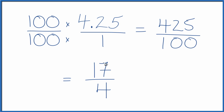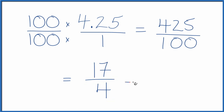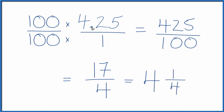This is an improper fraction because the numerator is larger than the denominator, so we could write it as a mixed number. 4 goes into 17 four times with 1 left over. Bring the 4 across. So we could also say that 4.25 equals the mixed number, or mixed fraction, 4 and 1/4 — and that's equivalent to 17/4.